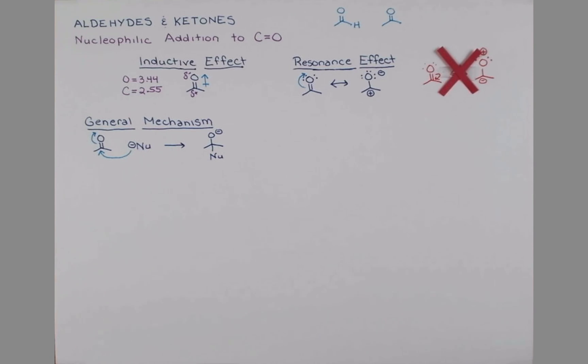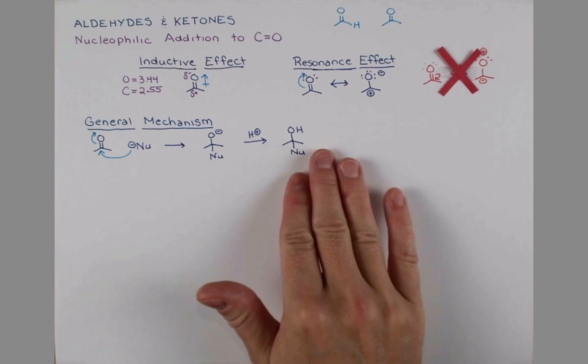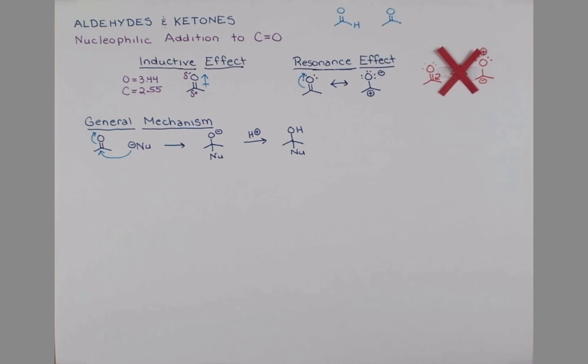Now in a second step we can add in some acid, which I'm just going to abbreviate as H+, and we'll produce an alcohol from this reaction.